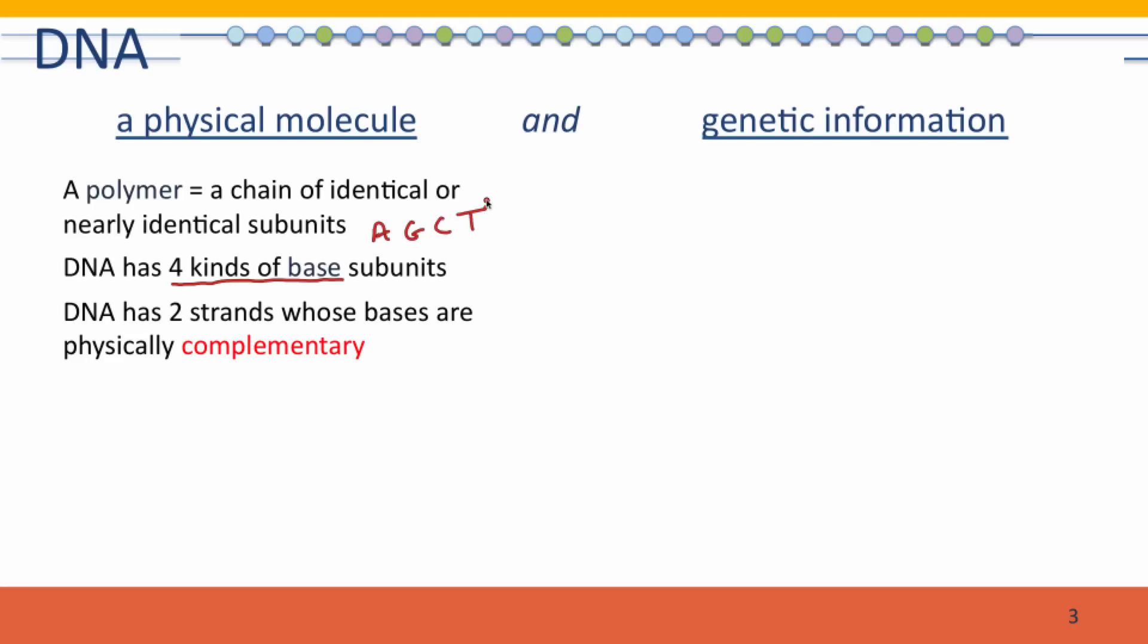DNA typically has two strands. We talk about it as if it was one molecule, but really the functional DNA in a cell is two molecules wound around each other. In these two strands, the bases that are across from each other are physically complementary. They're not identical, but they fit together.